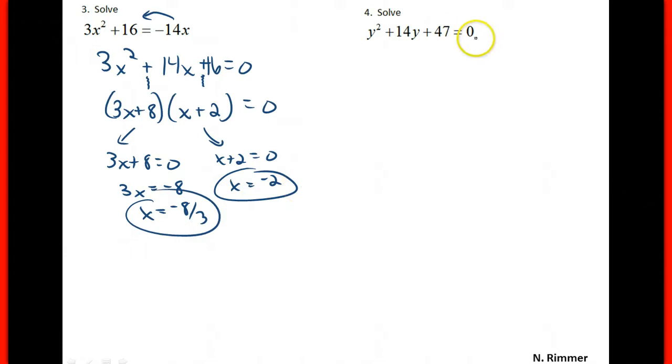For this quadratic, however, you can't factor it. Factors of 47 that add up to give you 14 can't happen, so we do b squared minus 4ac to find out what that is first.